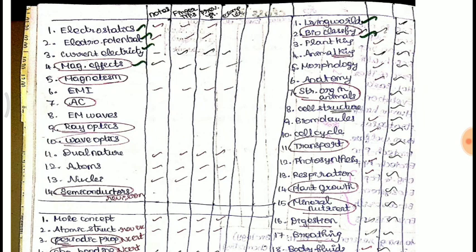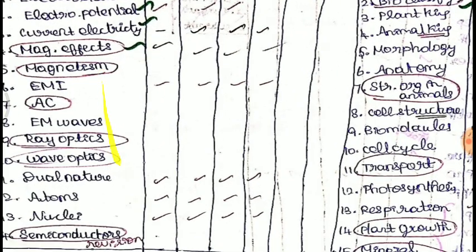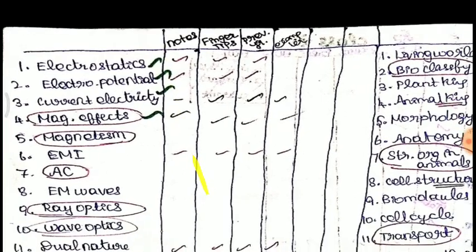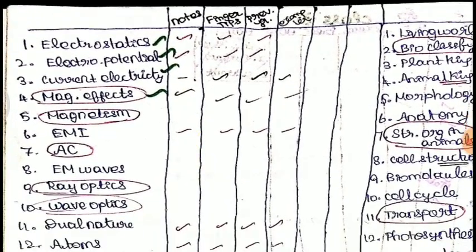Make a list of all your chapters. For each chapter, note the key resources: your notes and fingertips, previous questions and exemplar questions. Go through Fingertips Physics chapter by chapter, and track which chapters you have covered and which previous questions you have attempted.